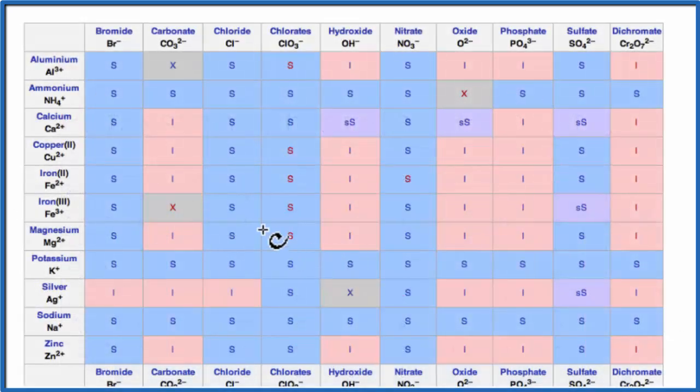On our solubility table, these are the positive ions, the cations, and we go down, we're looking for potassium, that's right here. And then chlorate, we're looking for that, that's an anion, it's negative, it's ClO3 minus, the chlorate's right here. So we'll go down where they meet, and we see that we have an S. That S means that potassium chlorate is soluble in water.